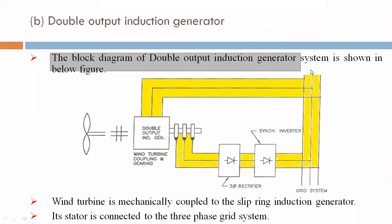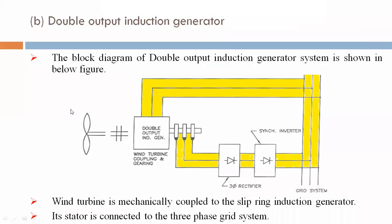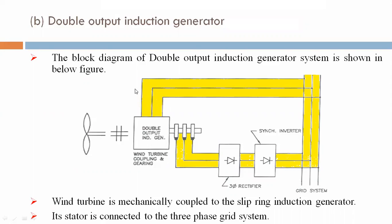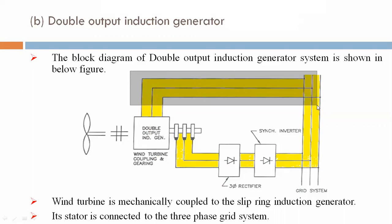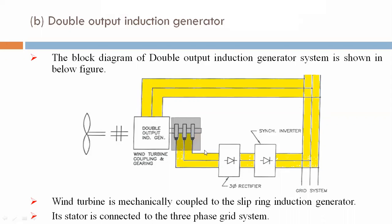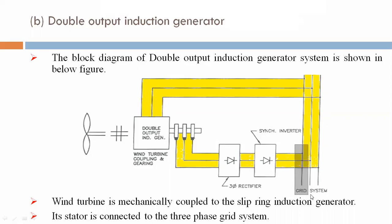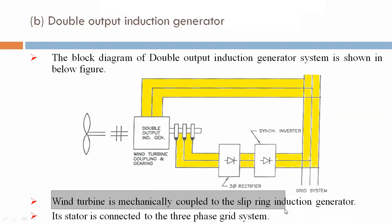The block diagram of the double output induction generator system is shown in the figure below. This is the wind turbine coupling system. The double output induction generator is connected via coupling and gearing system. One supply goes directly to the grid, and here a slip ring of the induction generator is present, through which the signal is rectified and converted by a synchronous inverter, and fed into the grid system via AC.